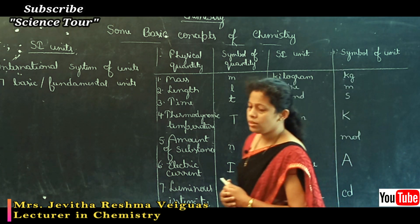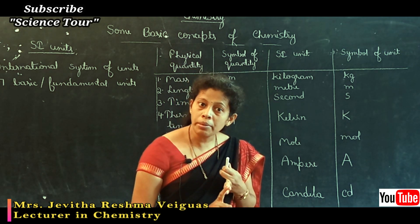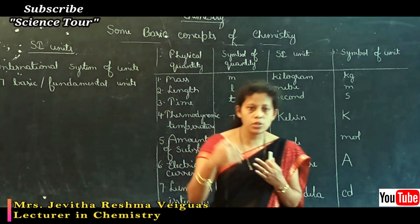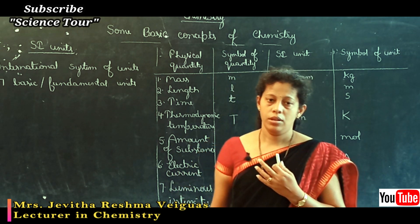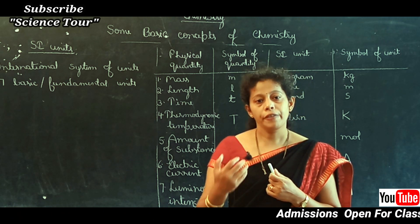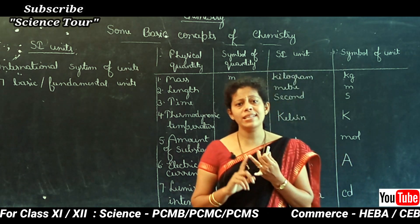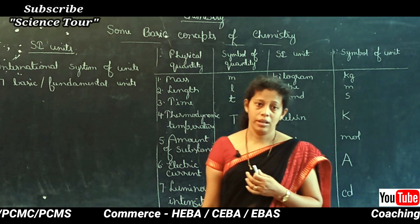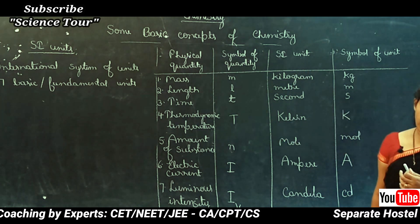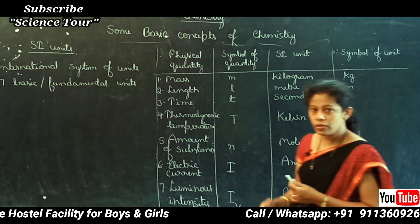Students, you know that when we express length, we sometimes use meters, centimeters, or millimeters. Similarly, mass can be expressed in kilograms, grams, milligrams, or nanograms. The prefixes milli, centi, nano, etc. stand for multiples or submultiples of units. Now let us study the prefixes used for SI units.